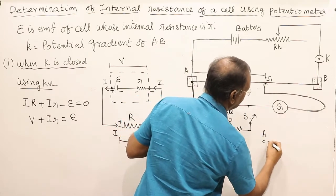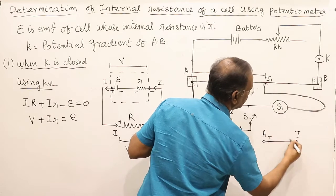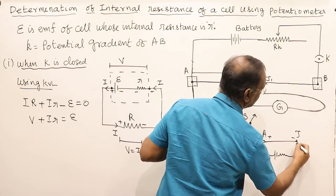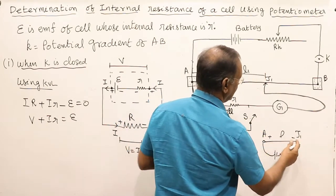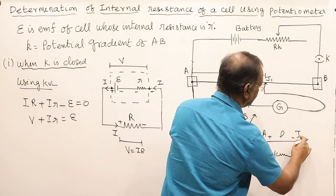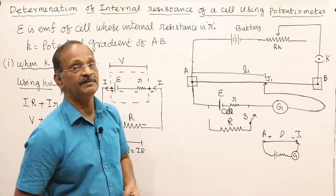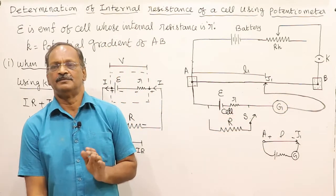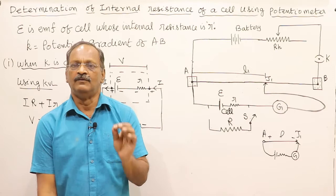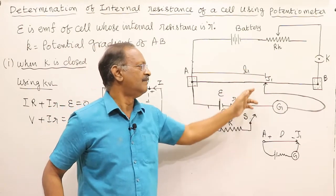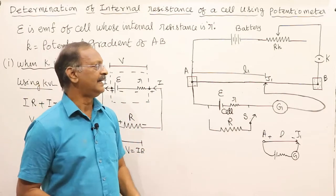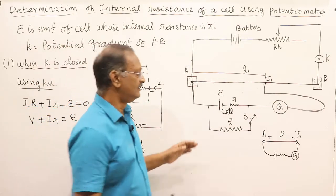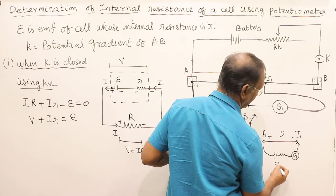At this point we obtain null deflection. This means the potential difference across the wire from A to J1 is balanced with the cell. J1 is at length L1. No deflection in the galvanometer means this potential equals the cell potential. Let L1 be the length in balance condition, and K be the potential gradient of wire AB. In this condition, S is open.